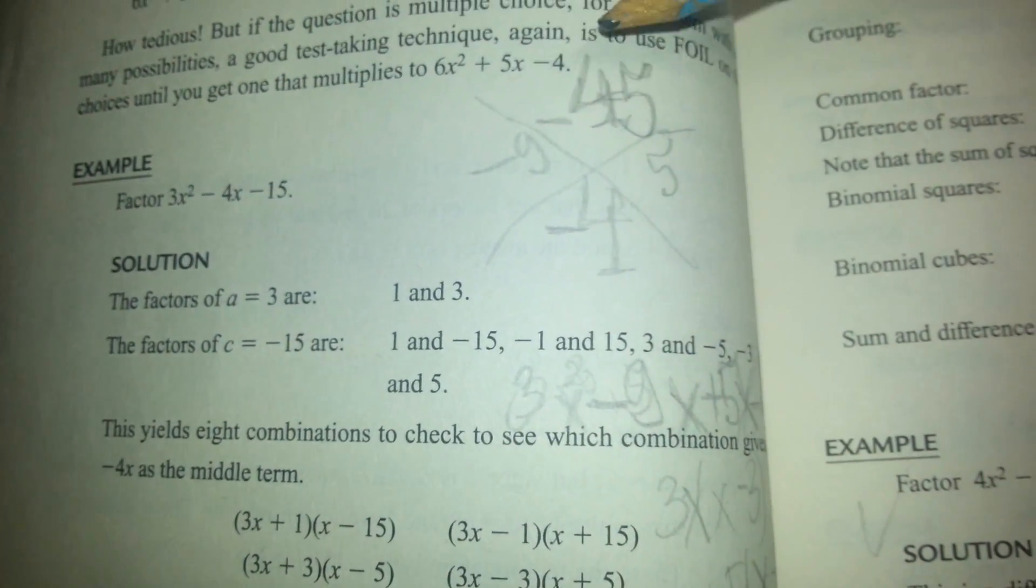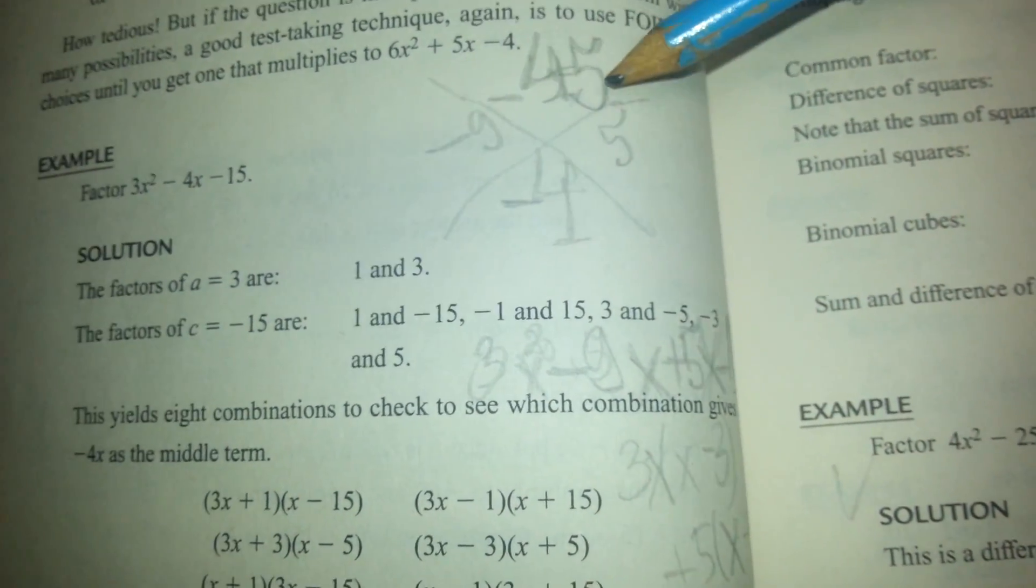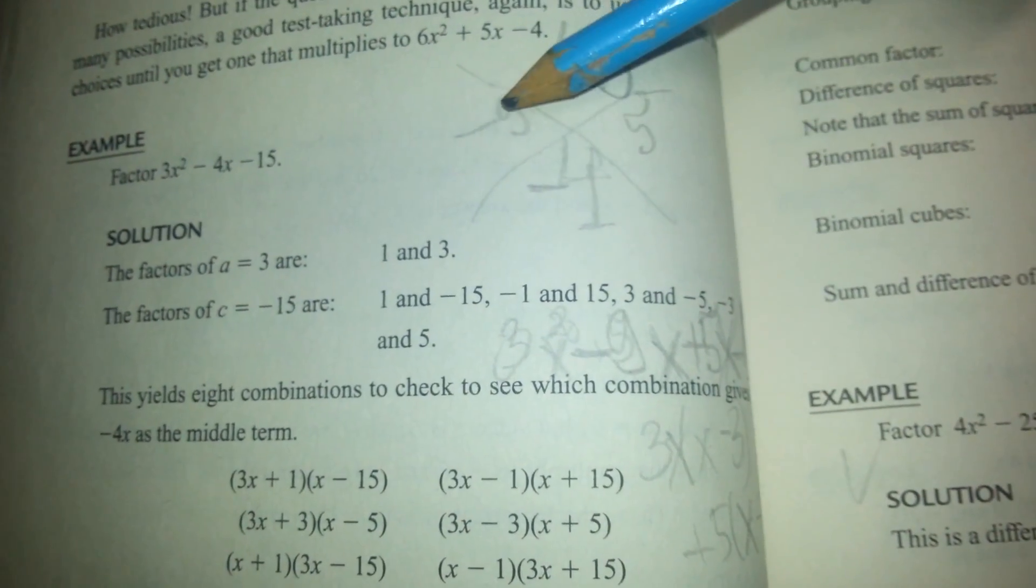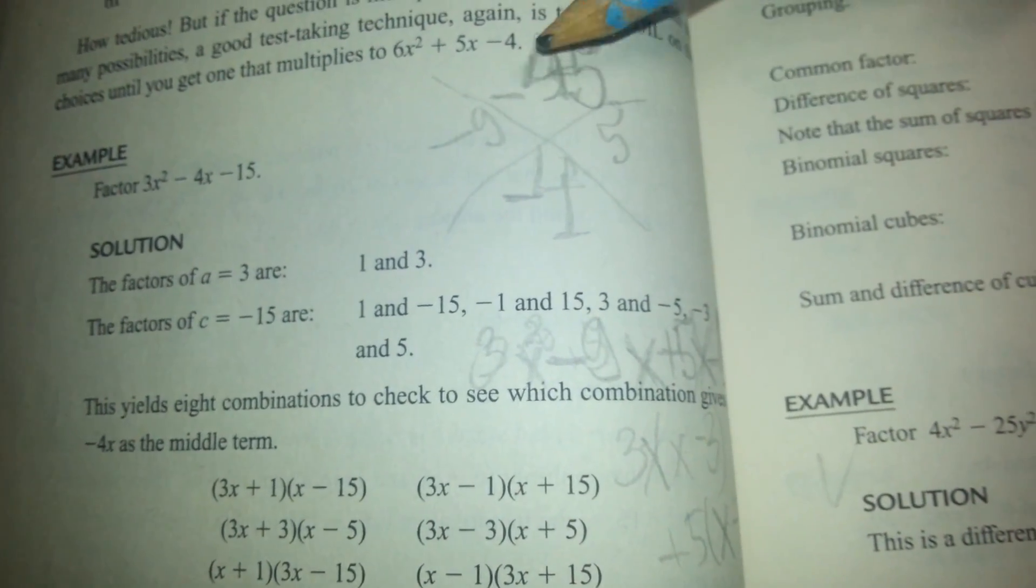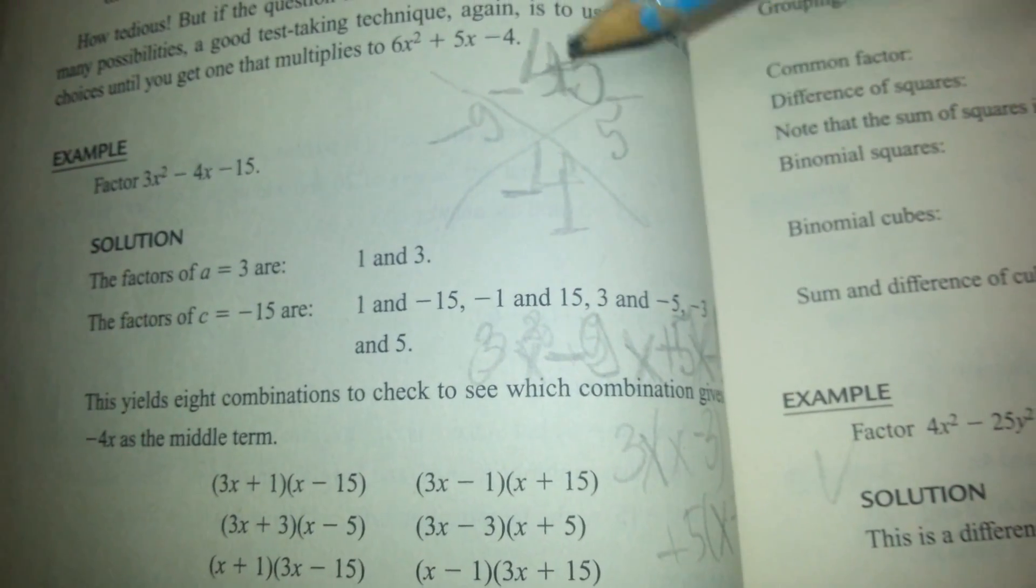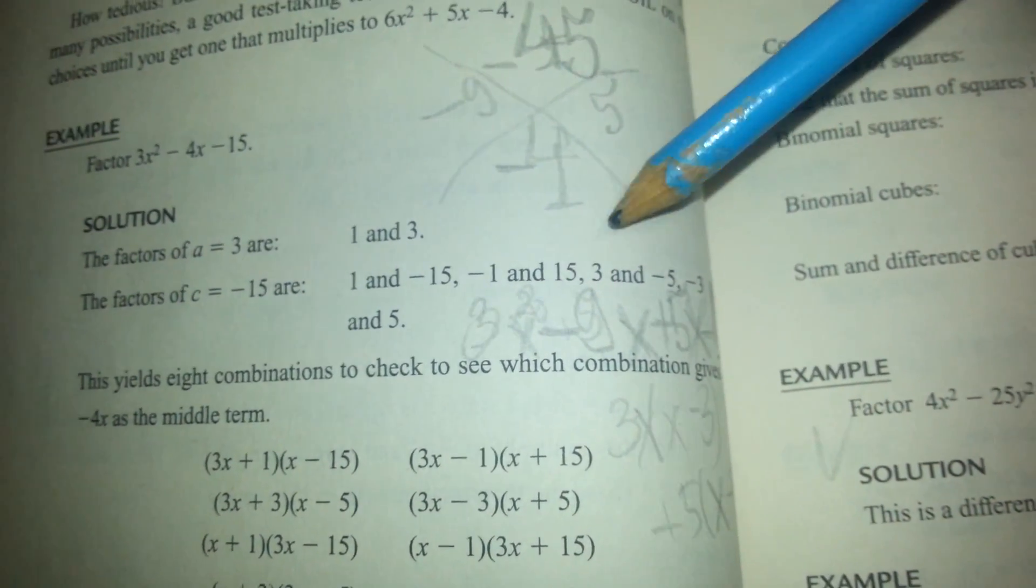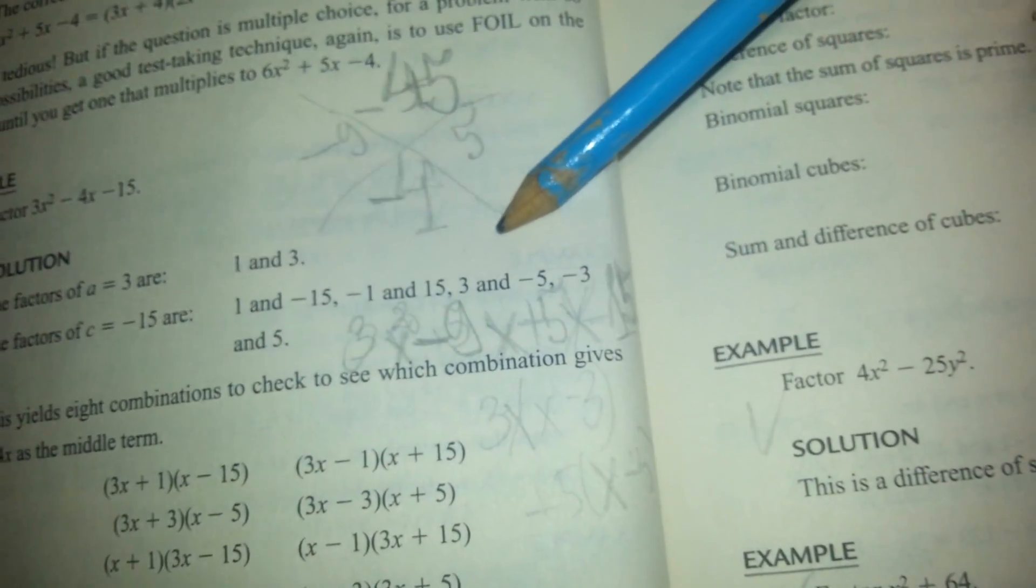So this one is much better. We got 3 times minus 15, we got minus 45, and then we gotta get minus 4 when we add these two numbers. So when you multiply minus 9 and 5, you get minus 45. When you add minus 9 and plus 5, you get minus 4.